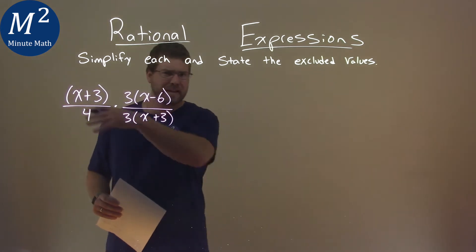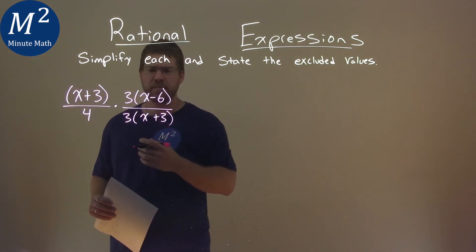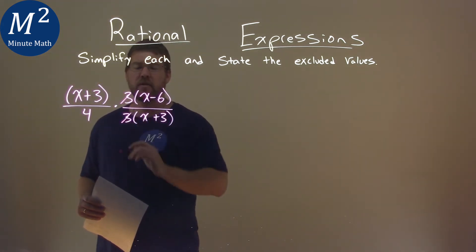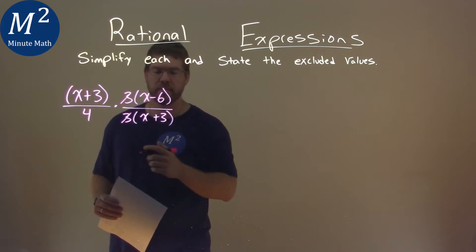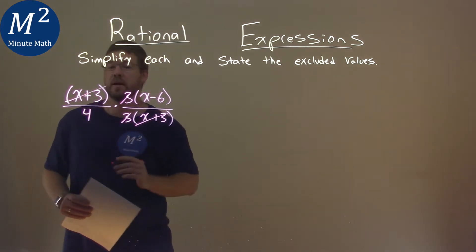First thing is we try to eliminate, cancel where we can. I see a 3 here and a 3 there, cancel each other out, and x plus 3 in the denominator cancels out with the x plus 3 in the numerator.